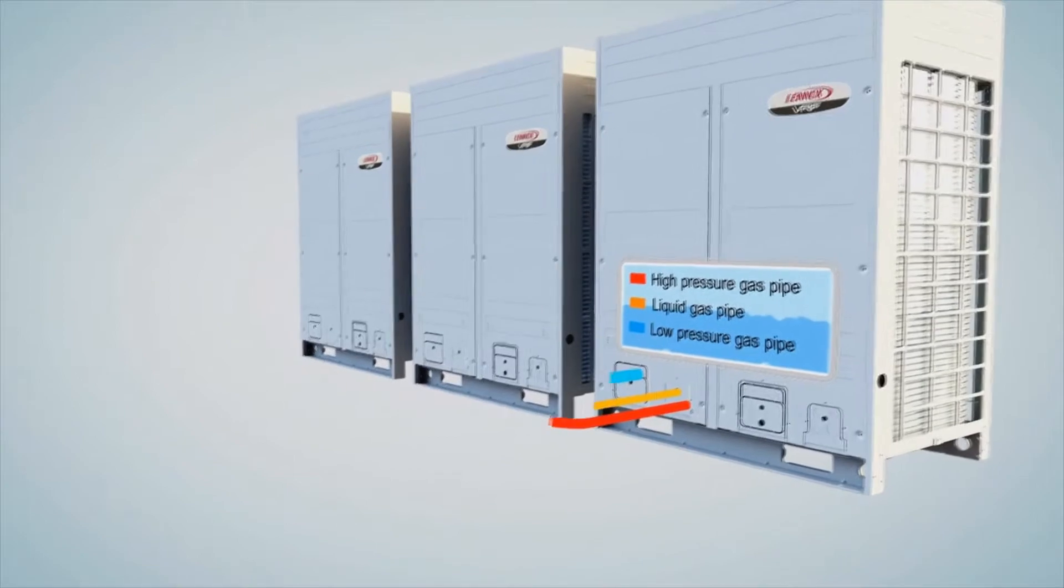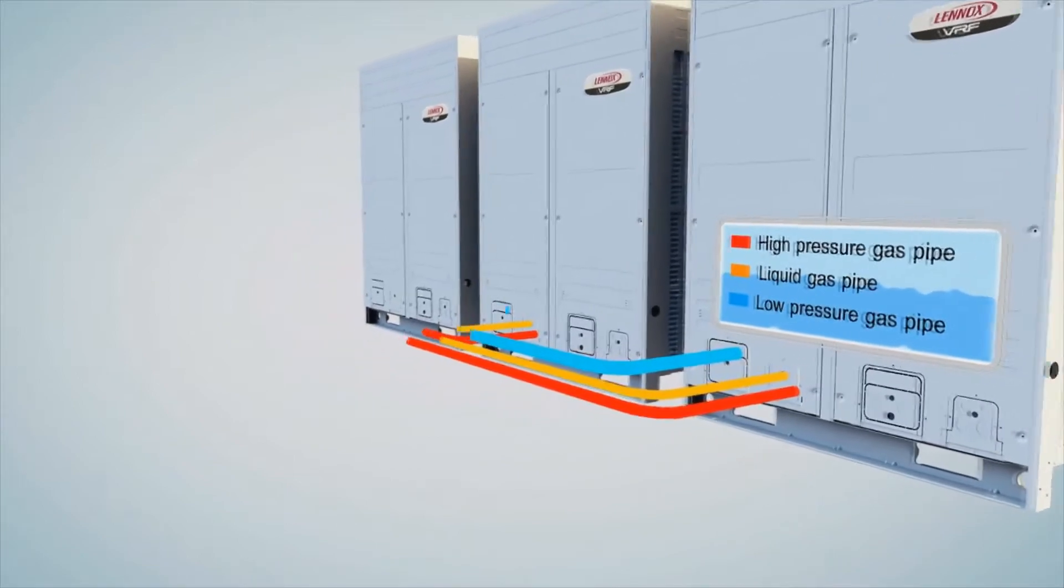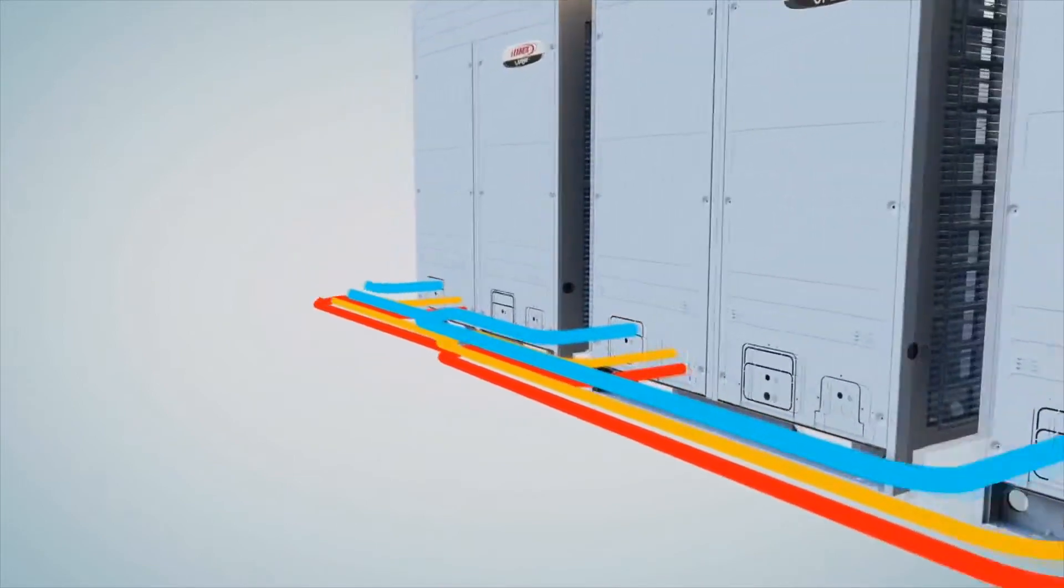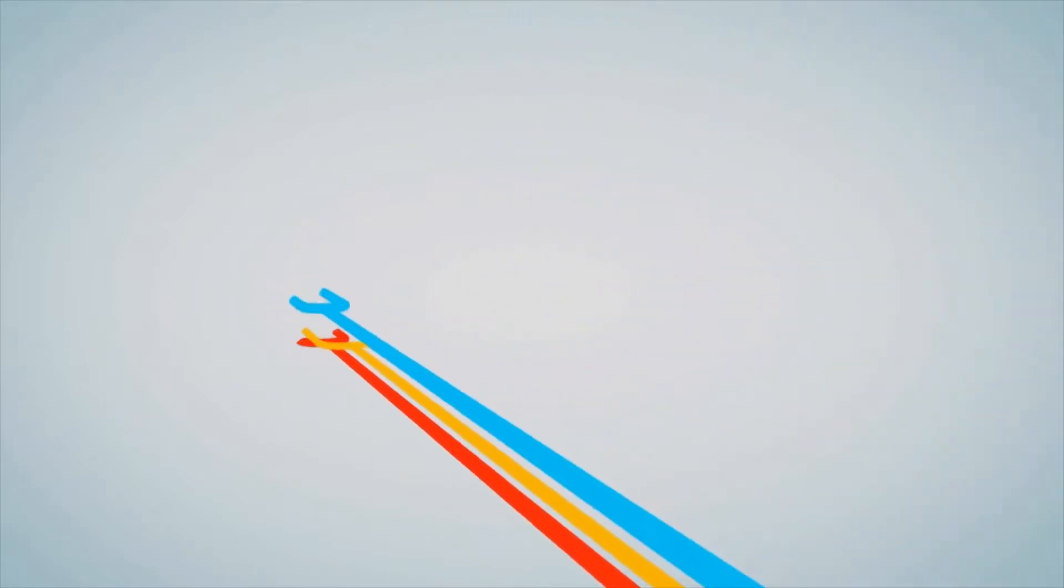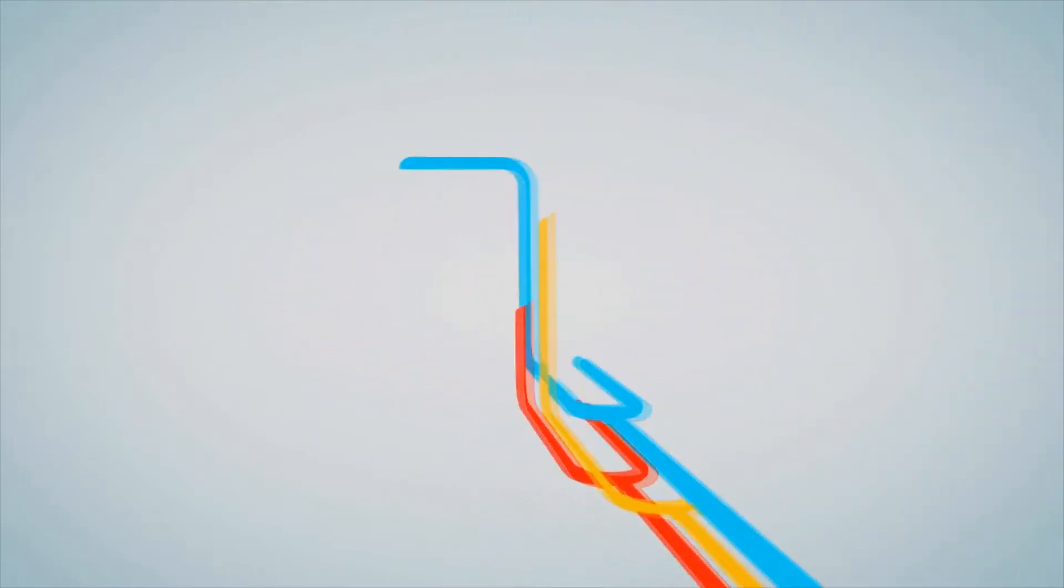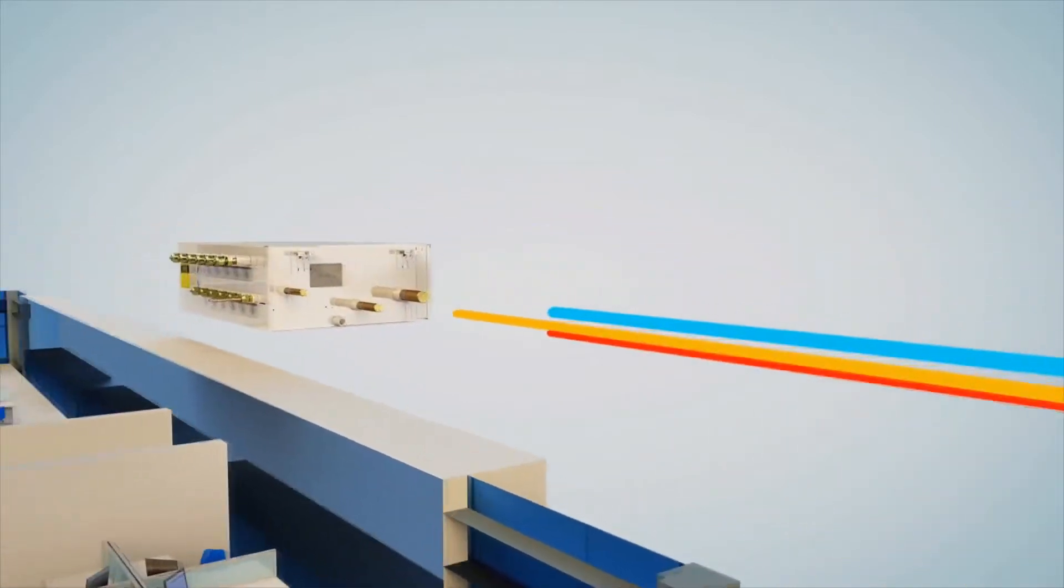Let's take a closer look at the Lennox VRF system. Three refrigerant pipes connect the outdoor units to the MS boxes: Liquid, suction or low pressure gas and high pressure gas. The MS box controls the direction of refrigerant flow through the indoor units.